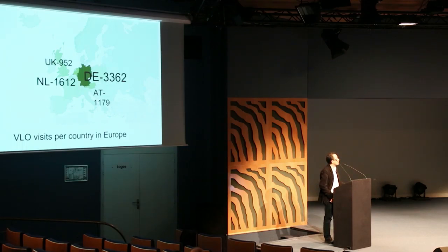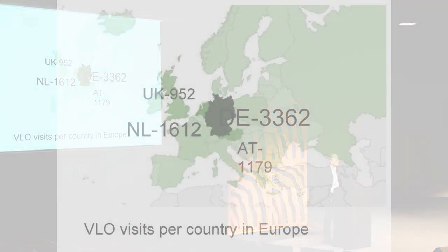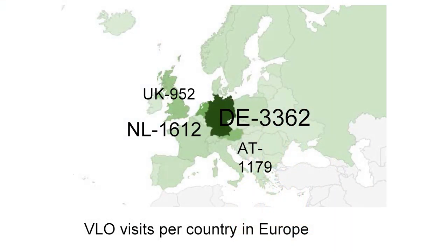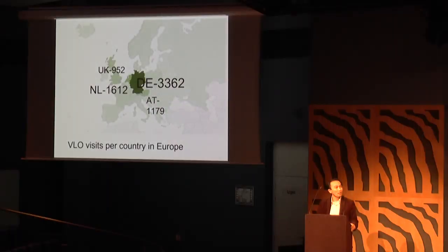In terms of geography, Germany is the absolute topper with more than 3,000 visits, followed by the Netherlands, Austria, and the UK. This is interesting, but generated by Piwik basically. However, this geo-analysis doesn't mean a lot on its own.